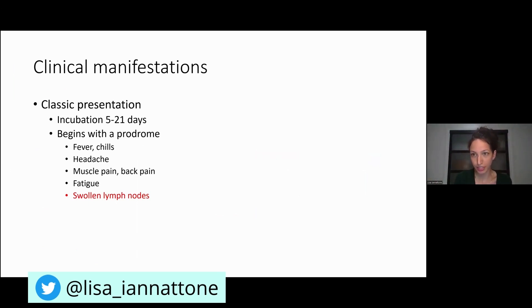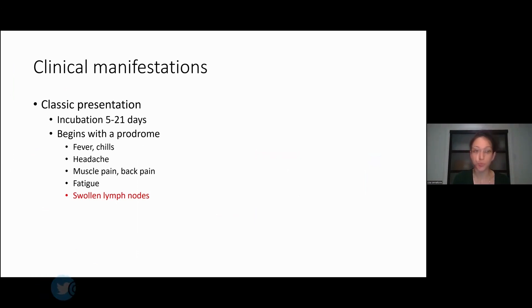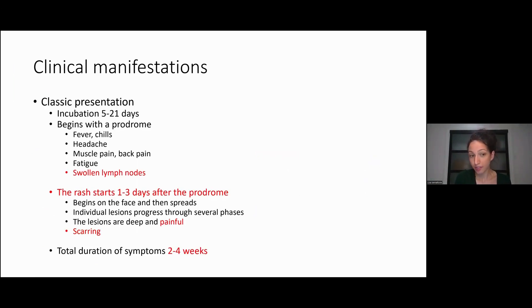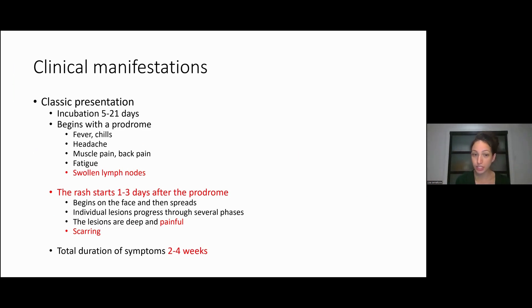Incubation period of five to 21 days, usually one to two weeks. Fever, chills, headache, back pain, muscle pain, fatigue, and classically swollen lymph nodes, which is one of the ways you can tell it apart from other infections. Then the rash starts one to three days after the prodrome. Classically, it begins on the face and then spreads centrifugally to the trunk and the limbs.